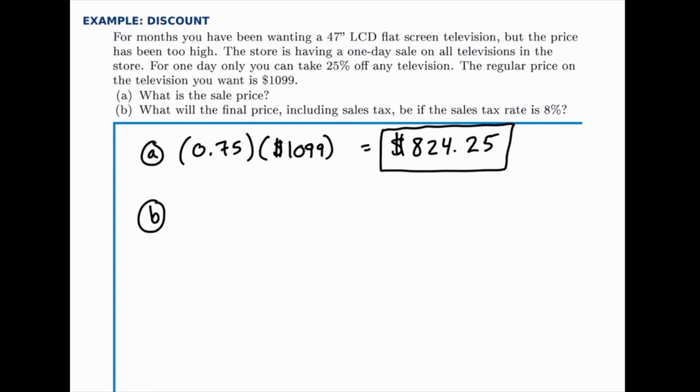So we're going to add 8% on. Again, we could do this in two steps by calculating 8% of $824.25 and then adding that on, or we can simply calculate 108%. So think about adding that 8% on first, and we wind up with 108% of what we had before, since 100% is the original total.